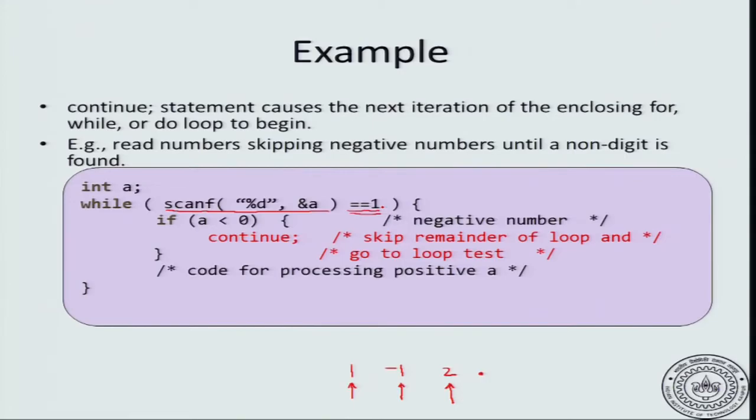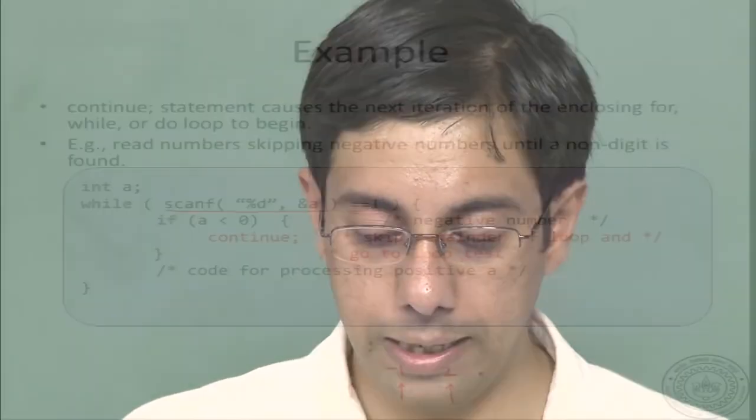The scanf statement has a return value. It gives you the number of inputs that was successfully read. For example, we are trying to read an integer in the %d specifier. When we try to read the first entry, it should succeed. When you try to read the second entry, it should succeed. When you try to read the third entry, it should succeed. In all these, the scanf %d will return a 1 because 1 entry has been read correctly.